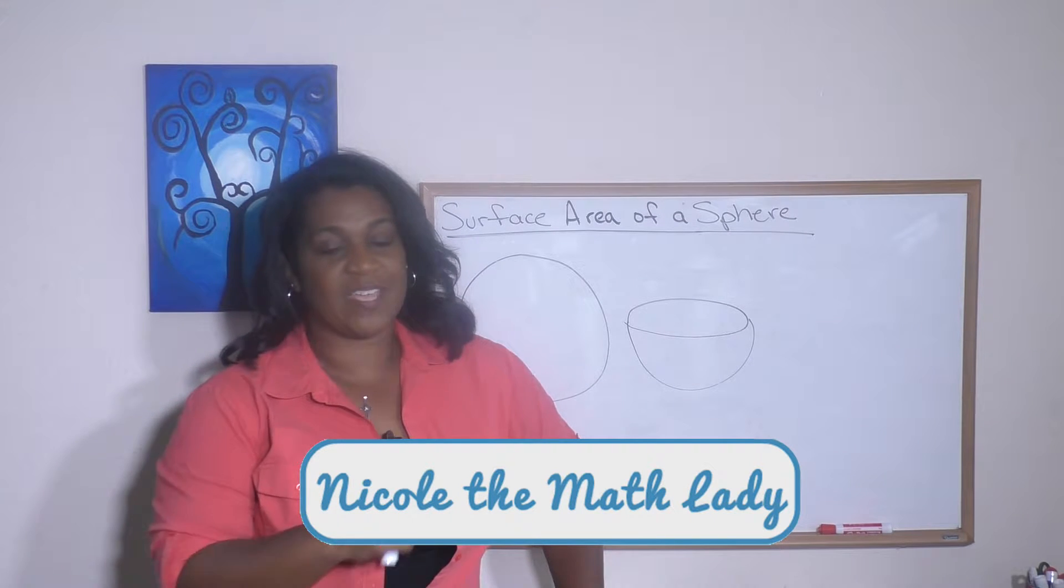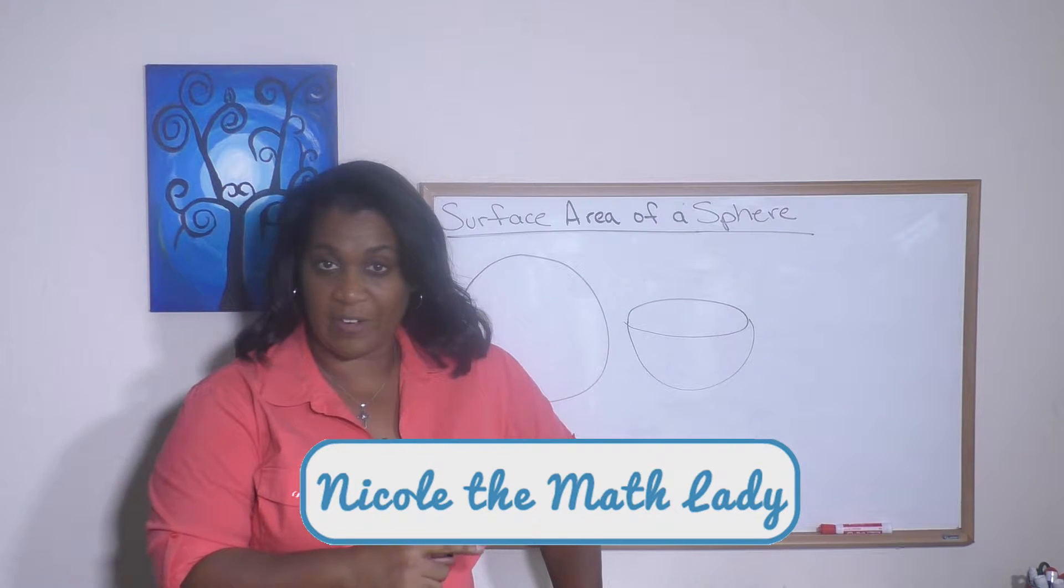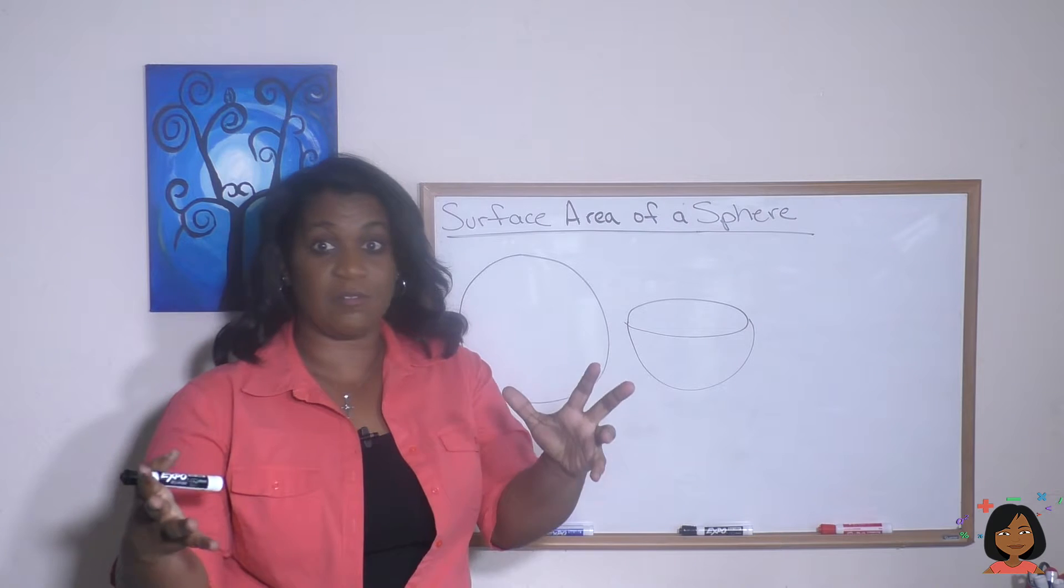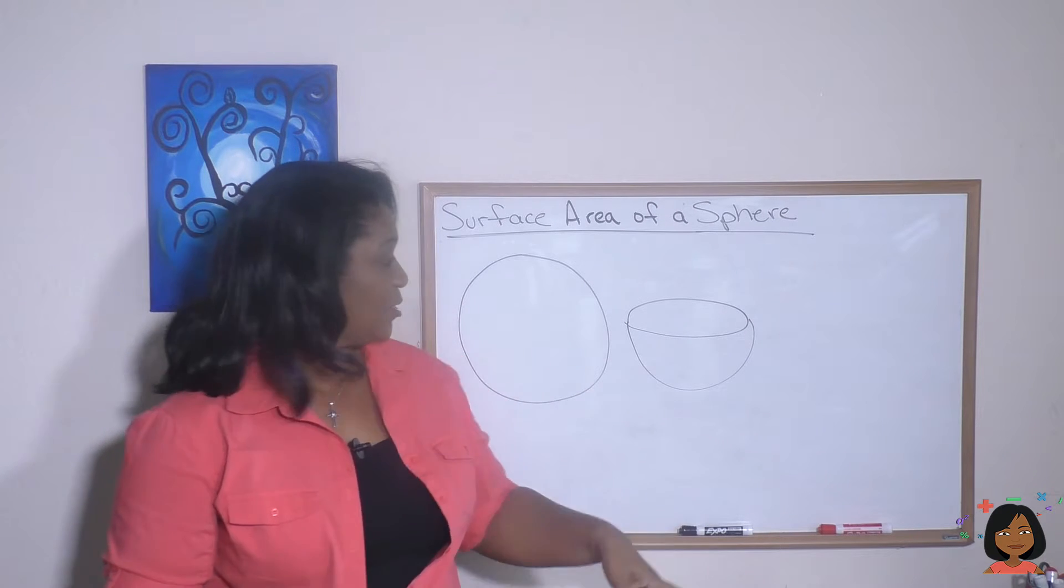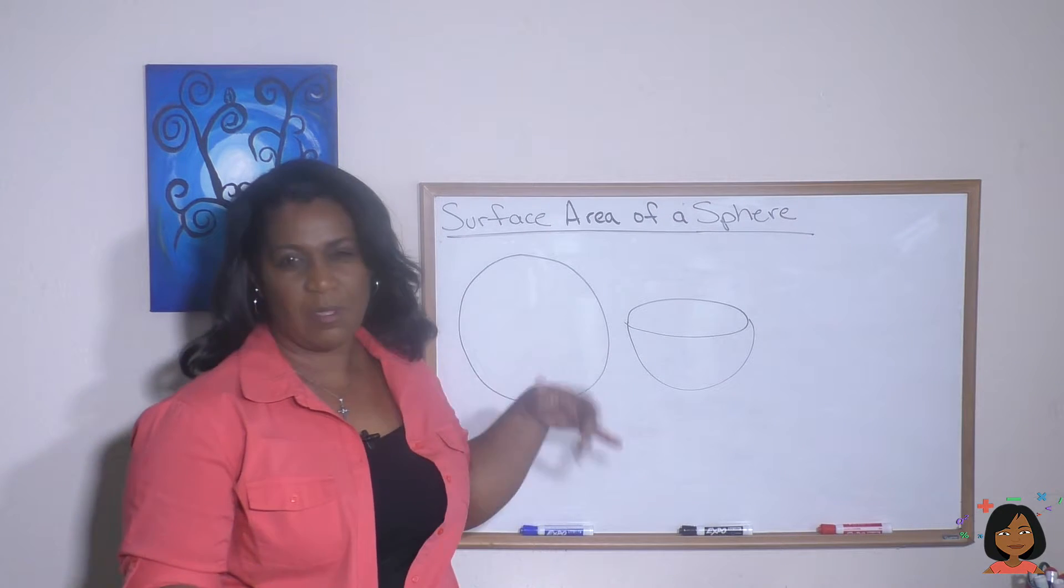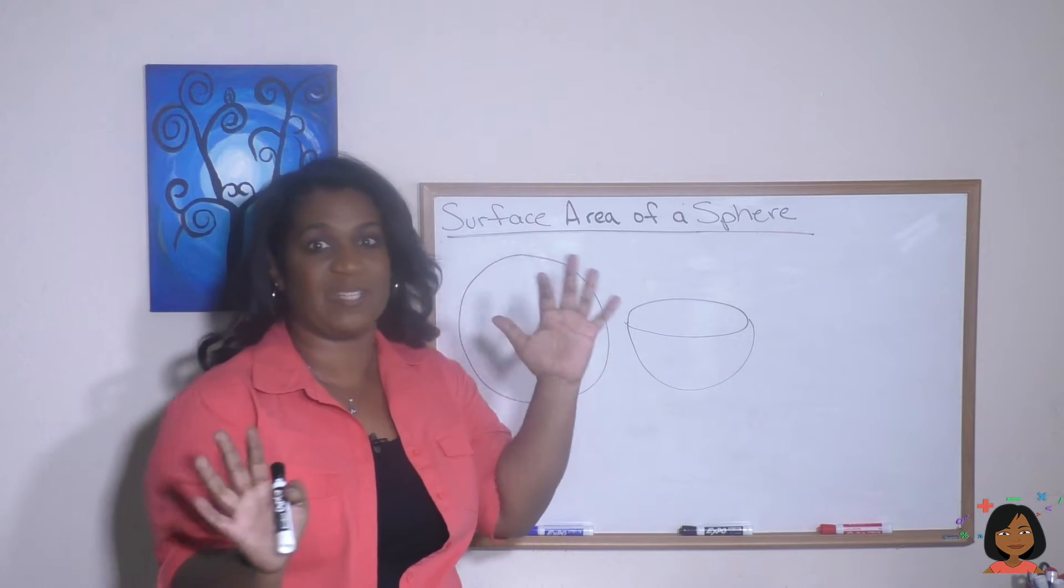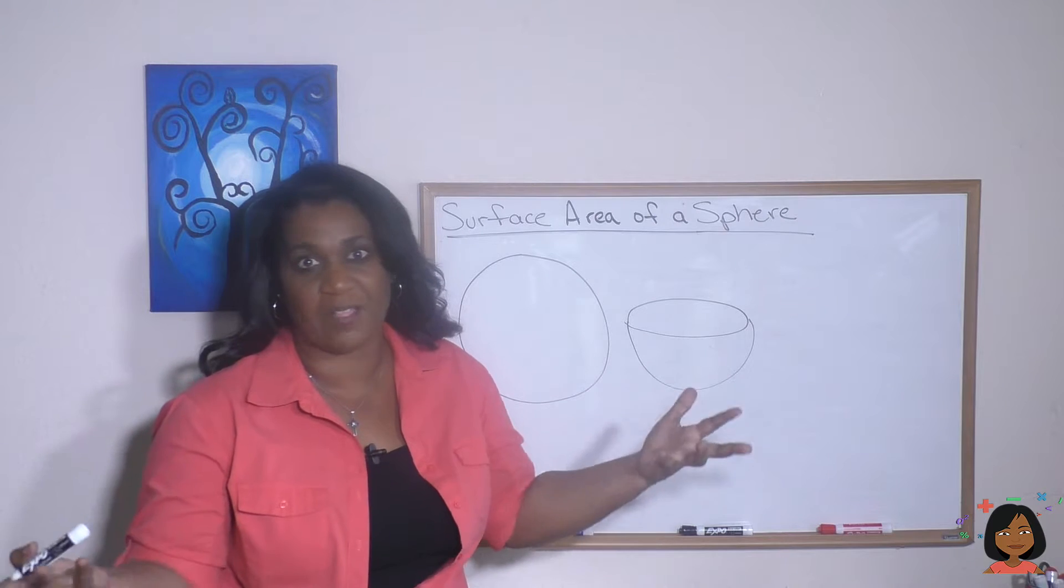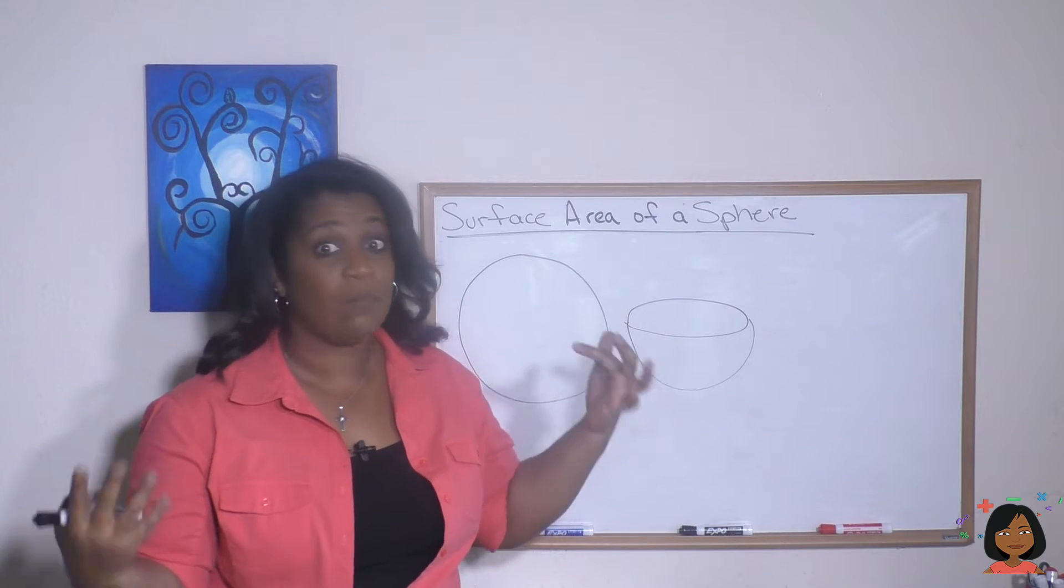Hi, it's Nicole the Math Lady. Today we're talking about the surface area of a sphere. A sphere is the three-dimensional counterpart to a circle. You can see I tried to draw a circle and make it look like a sphere. I just cut it in half so you could see it really is a sphere. Think of your basketball, your soccer ball—any of your balls are spheres. Well, how do you find the area?